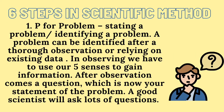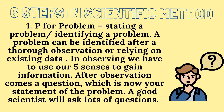The first one is P, for problem — stating or identifying a problem. A problem can be identified after a thorough observation or relying on existing data. In observing, we have to use our five senses to gain information. After observation comes a question, which is now your statement of the problem. A good scientist will ask lots of questions.